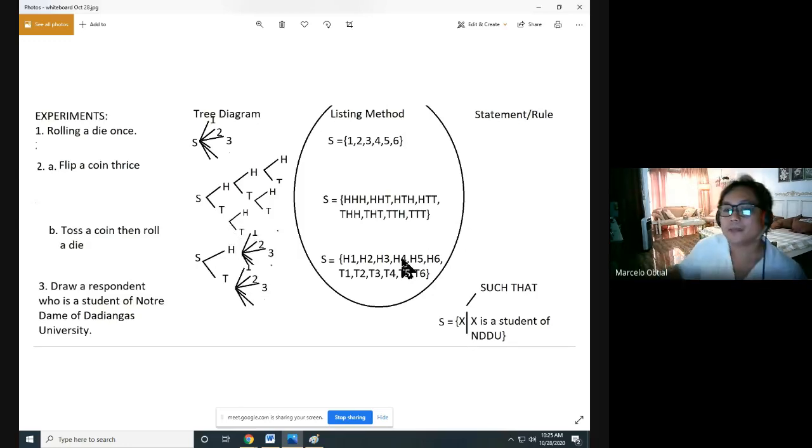This is the tree diagram for letter A. And this is the listing method for letter 2A.